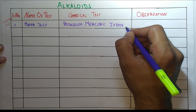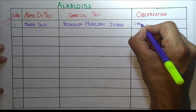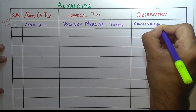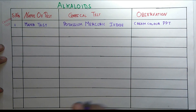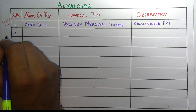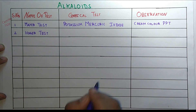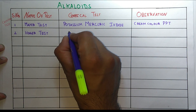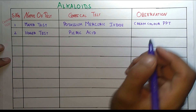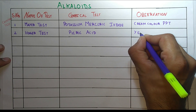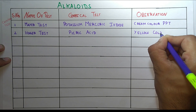In Mayer's test, the observation is a cream colored precipitate. The second test is Hager's test, in which we use picric acid, and the observation is a yellow colored precipitate.